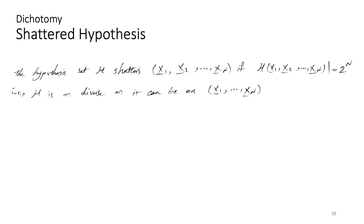As mentioned, 2 to the power of n is the upper bound for dichotomies. We only call it a shattered hypothesis set if and only if you actually reach that 2^n value — the upper bound of our dichotomies. In the case that for a given number of samples i to n, if the number of dichotomies equals 2^n, we call it a hypothesis set that shatters those points. If it's smaller, the hypothesis set was not shattered.